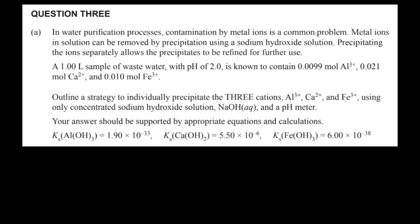This is quite useful in everyday life. So precipitating ions separately allows the precipitates to be refined for further use if you want to collect them and use them for something else. Anyways, so we have a liter sample of this wastewater. It has a pH of 2 and it's known to contain a certain number of moles of aluminum 3 plus ions, calcium 2 plus ions, and iron 3 plus ions.